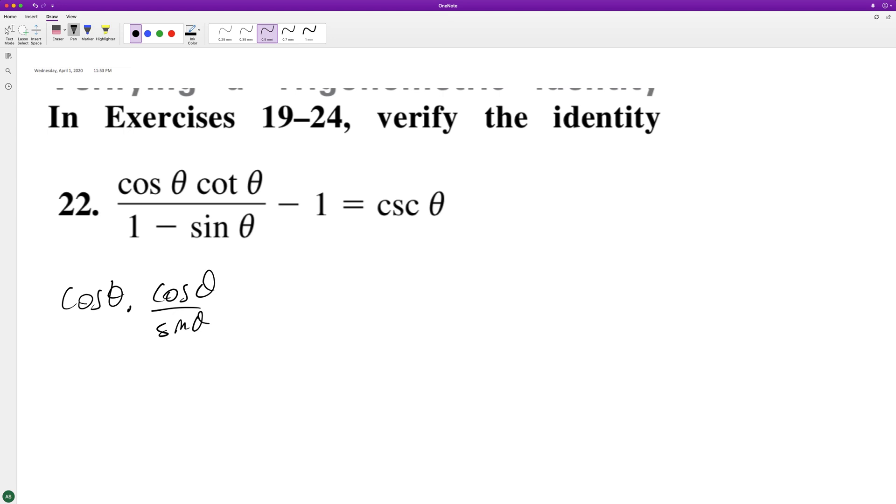And then the bottom, we can pull that up. So we end up with cosine squared theta. And then this here, multiply that across and we get sine theta minus sine squared theta.